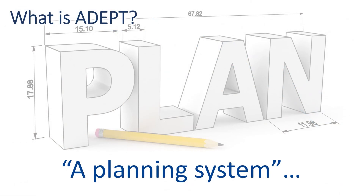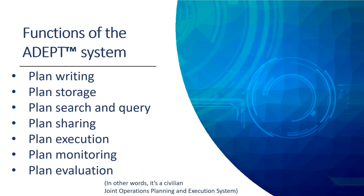What is ADEPT? In simplest terms, it's a planning system. ADEPT has seven main functions: plan writing, plan storage, plan search and query, plan sharing, plan execution, and plan monitoring and evaluation.